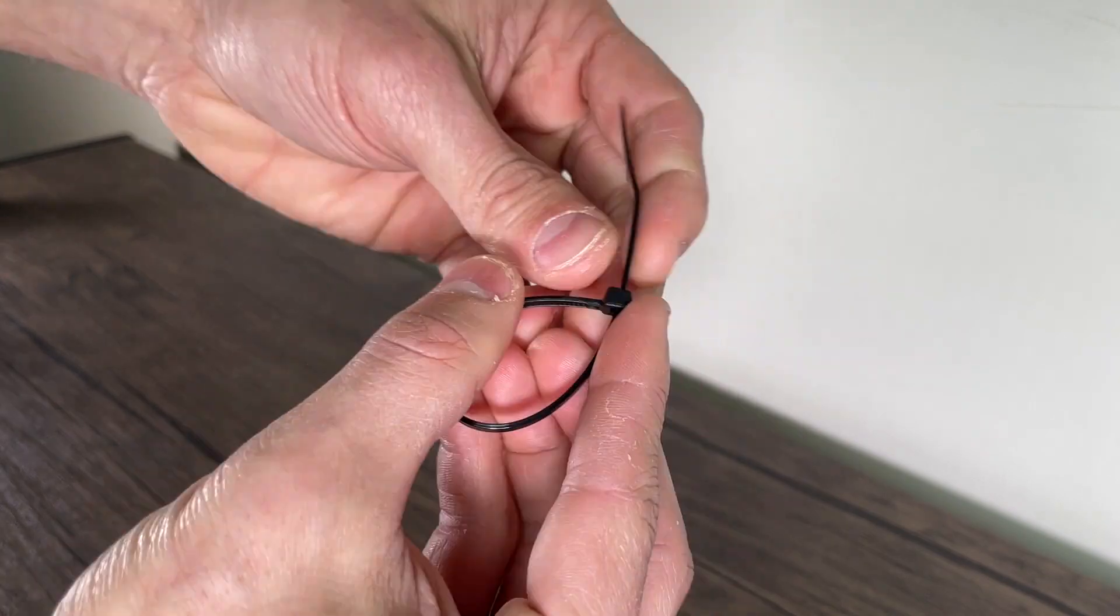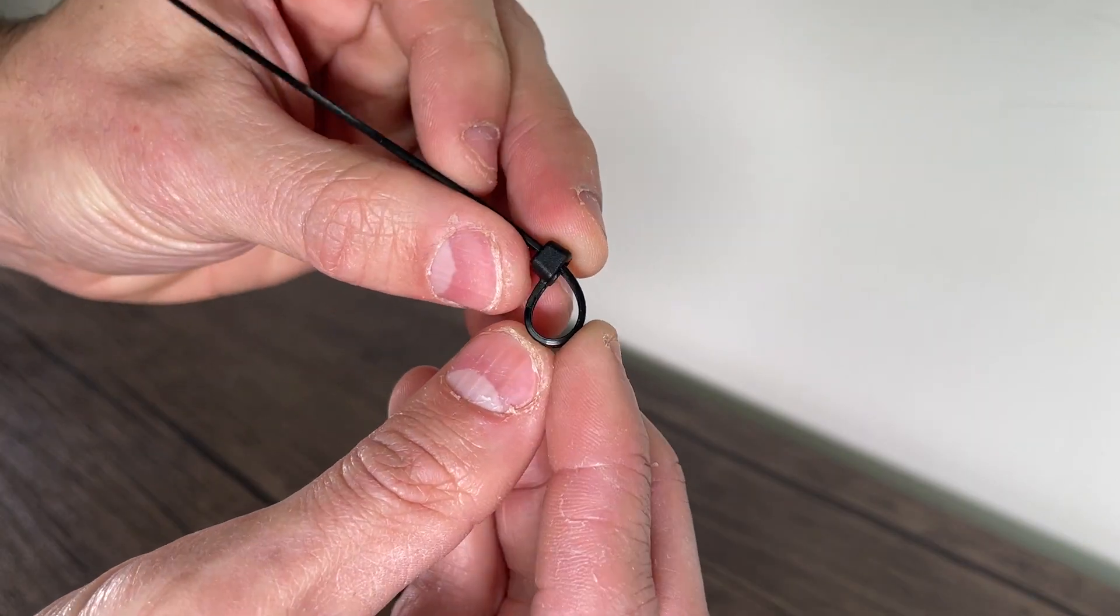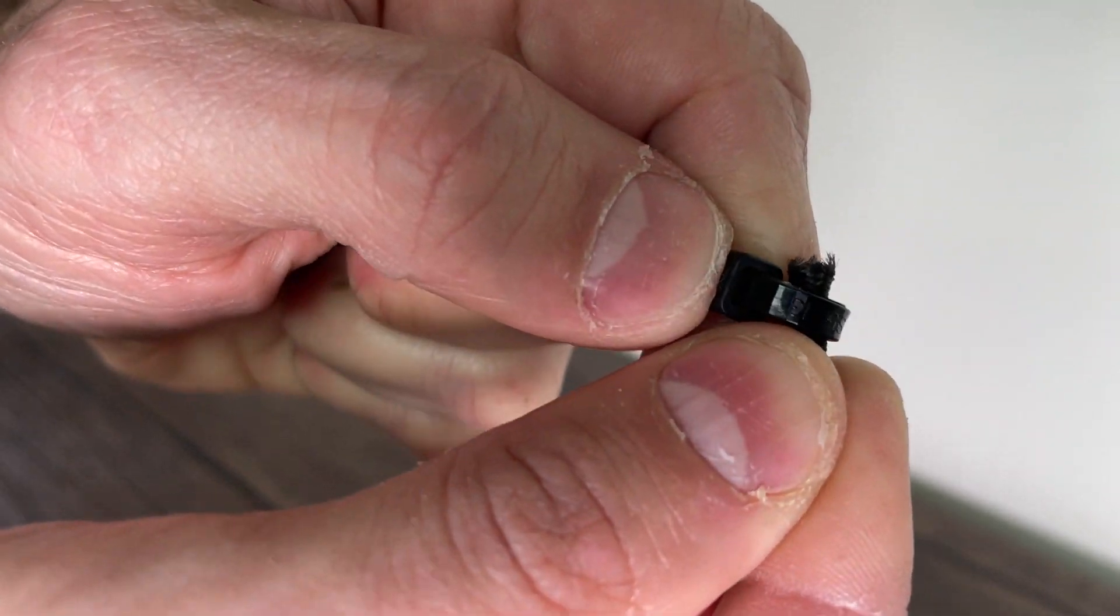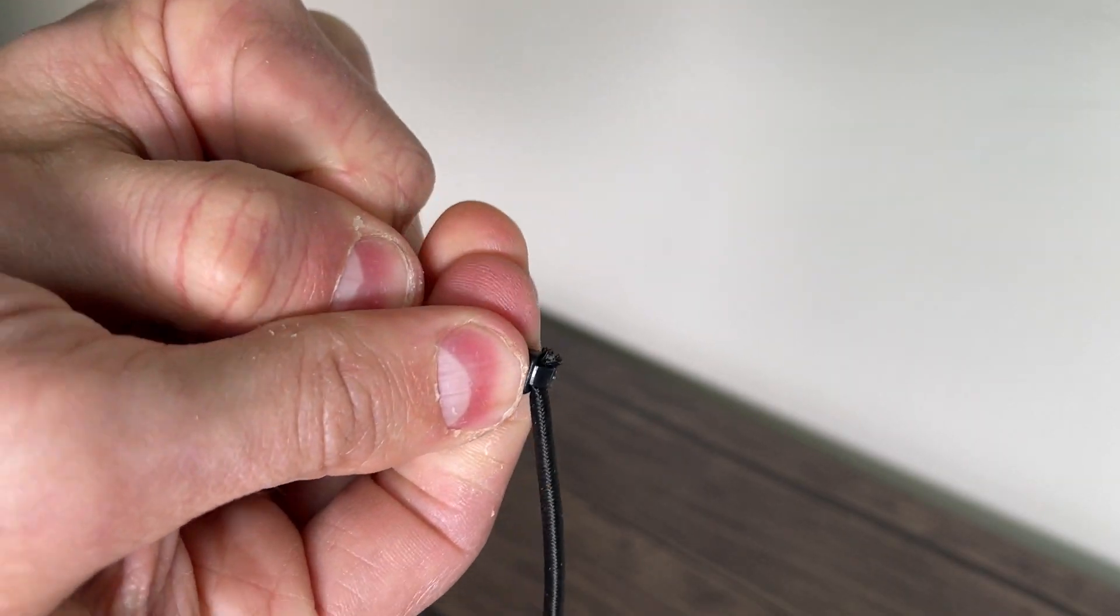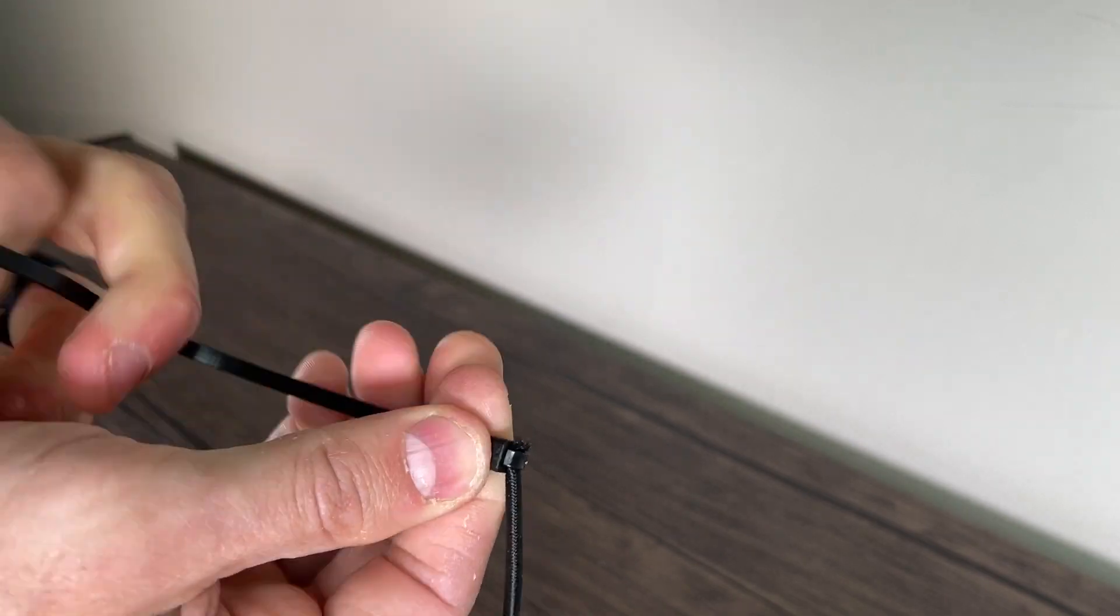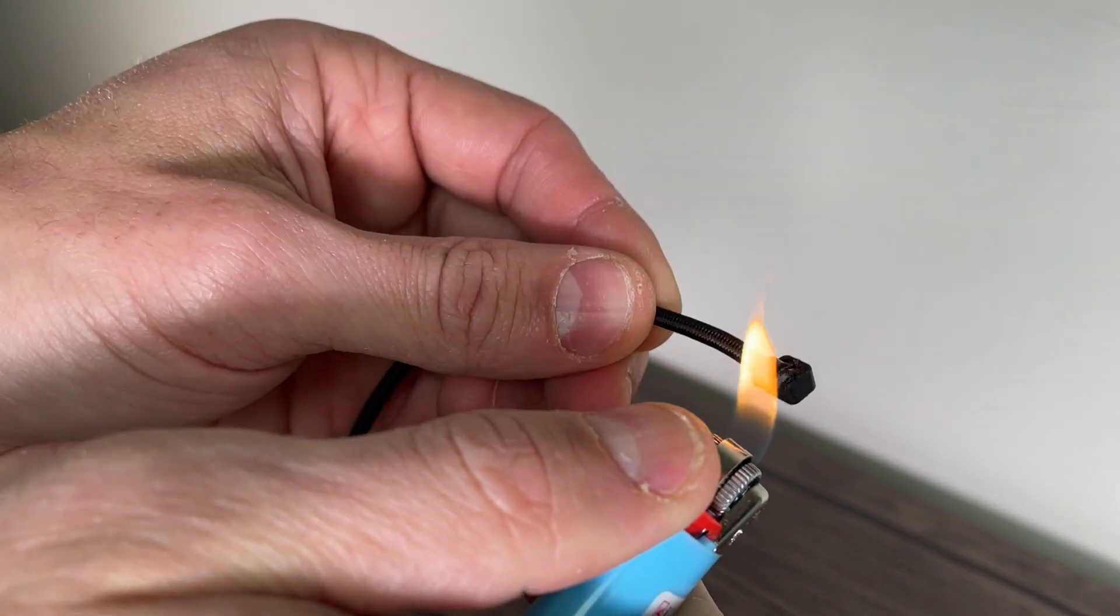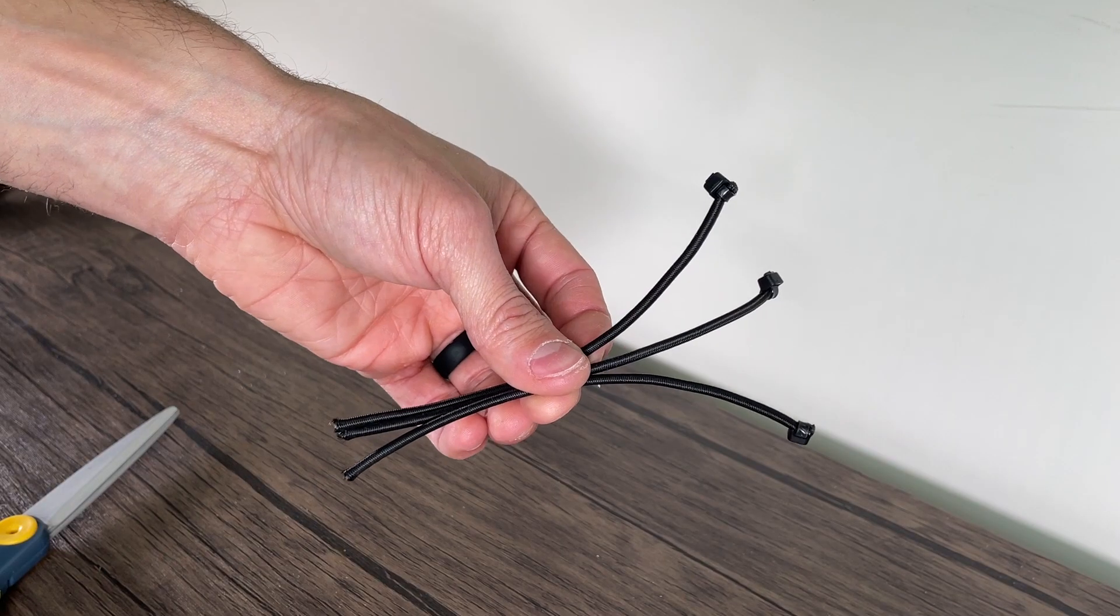Next, take your zip ties and create small loops like shown. Then with one of the longer cords, tightly zip one of your zip ties to the end. It's important to make sure the zip ties are as tight as possible so they don't come loose. Then, use a lighter to melt the frayed ends and repeat the steps for the other two long bungees.